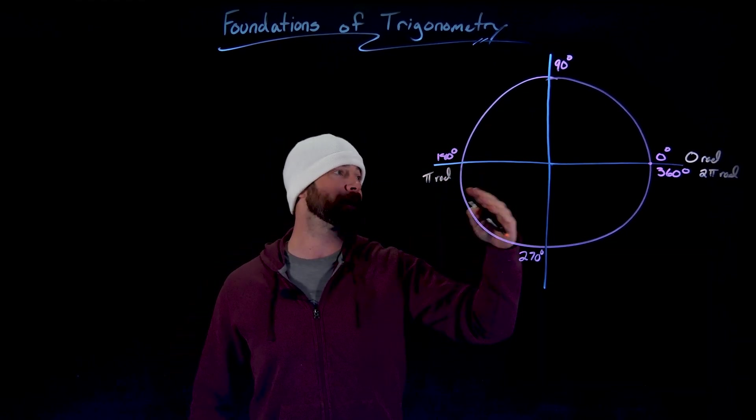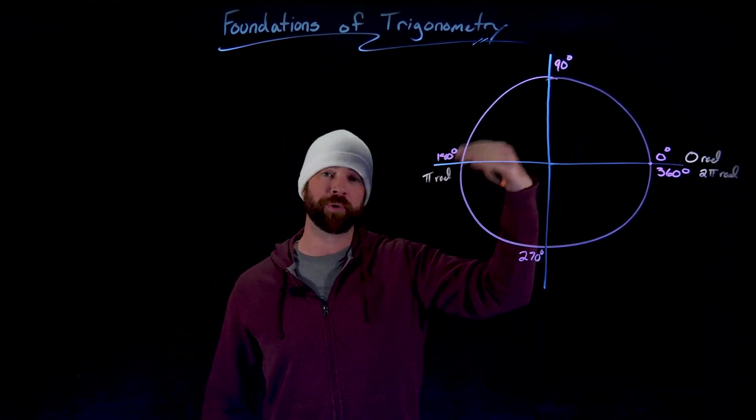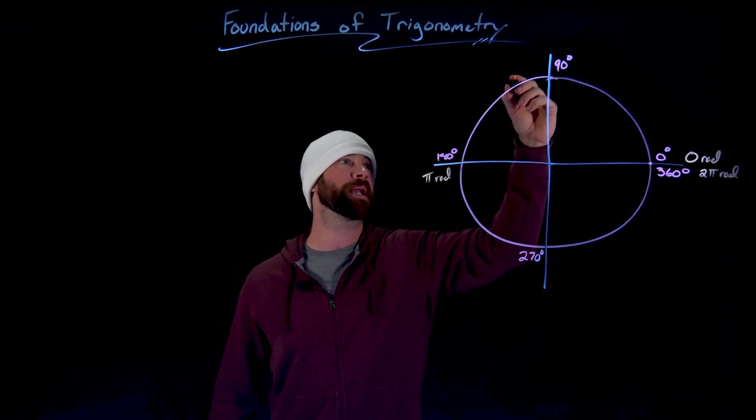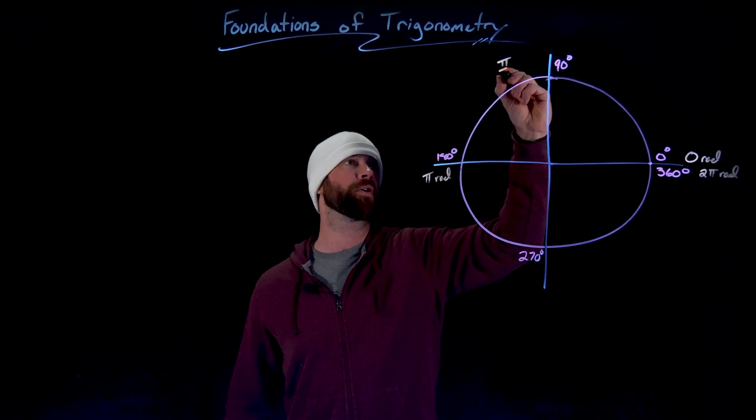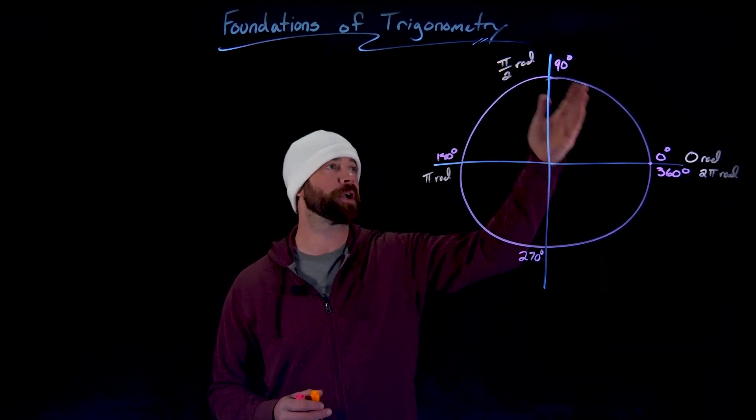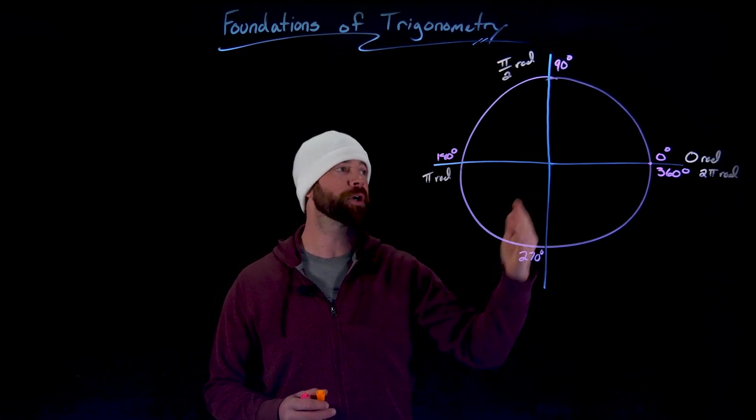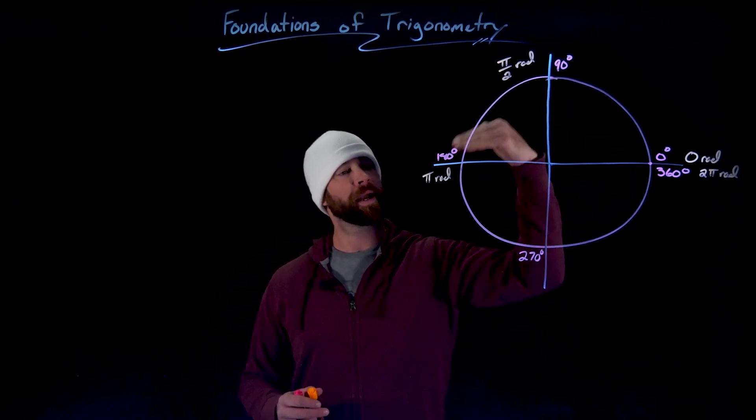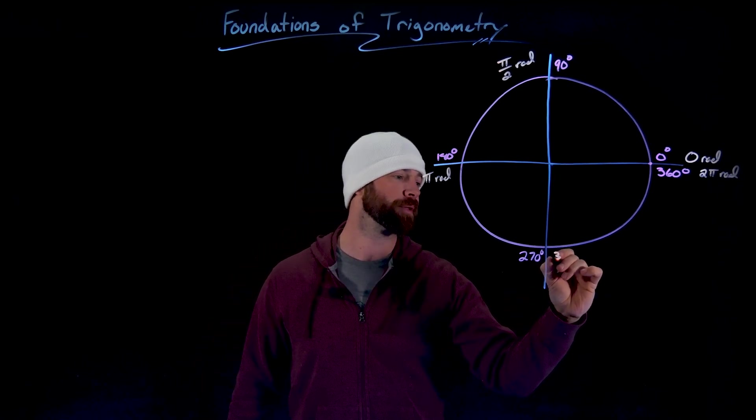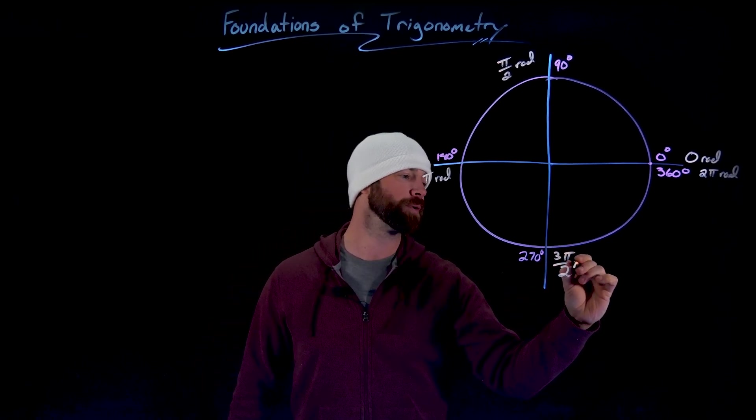If we now wanted to go somewhere between or the halfway point between pi radians and zero radians, well that would be half of a pi radians or what we call pi over two radians. And then if we want to go three fourths the way around this circle, we have half a pi, pi, and then one and a half pi's or another way of writing this would be three pi over two radians.